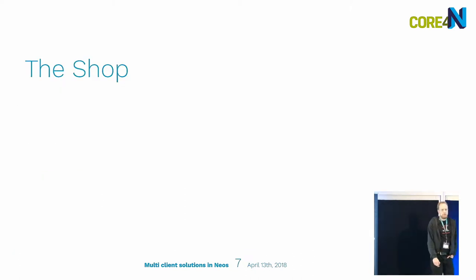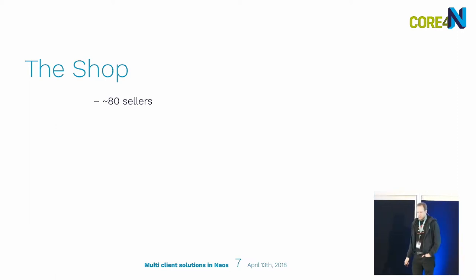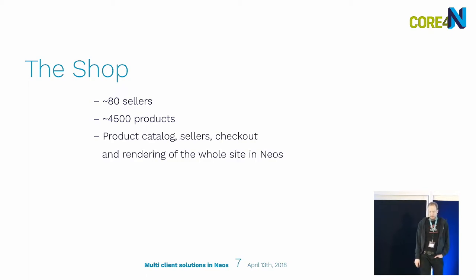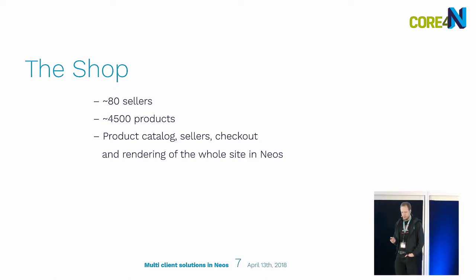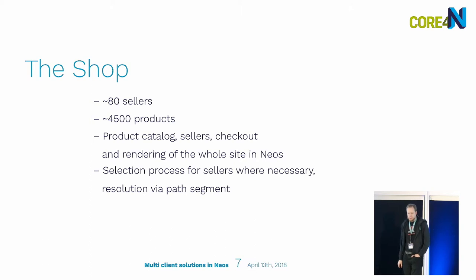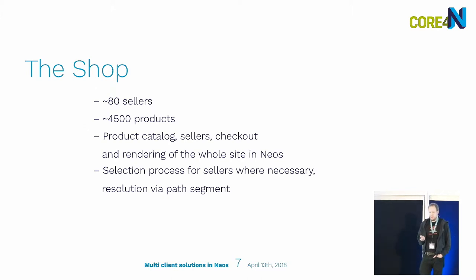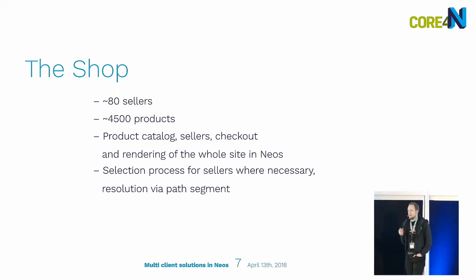The second part of the project was a shop for all of them — about 80 members joined the platform to create their own shops, with 4,500 products. The product catalog, seller selection, the checkout process, and rendering of everything is done in Neos. A selection process for sellers is necessary; for example, on a product details page you have to select one of the partners before you can proceed with checkout, which is the most important part for the customer.